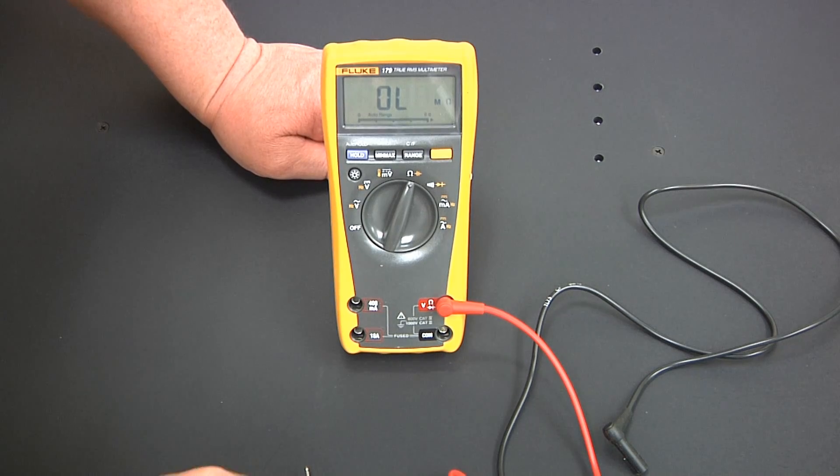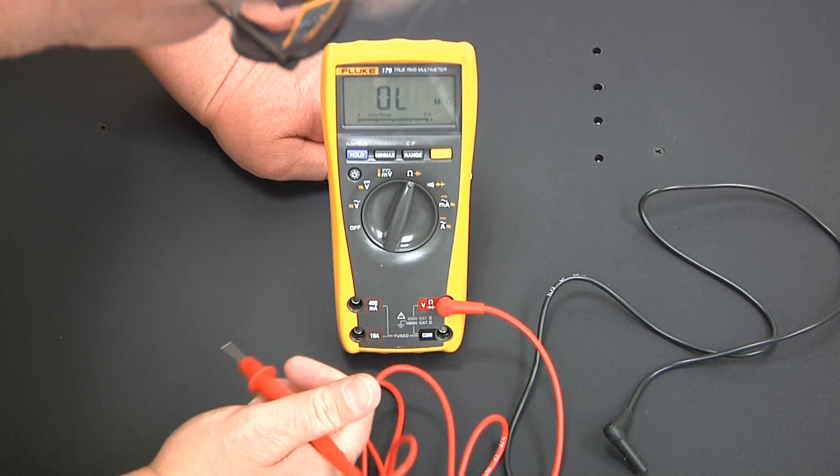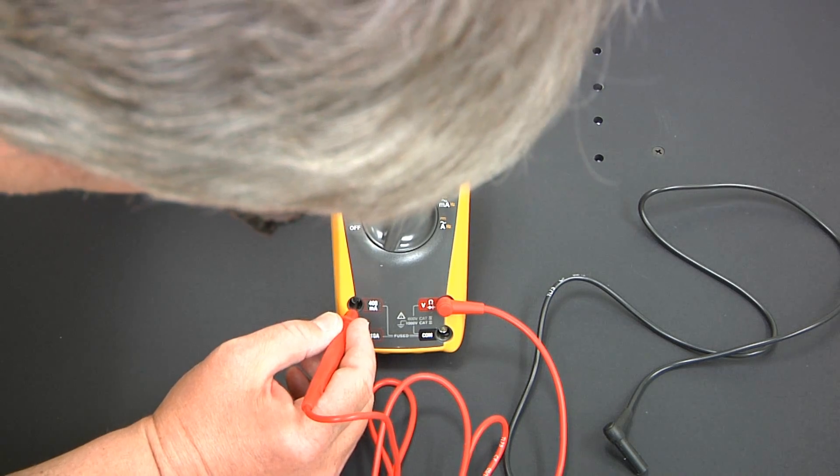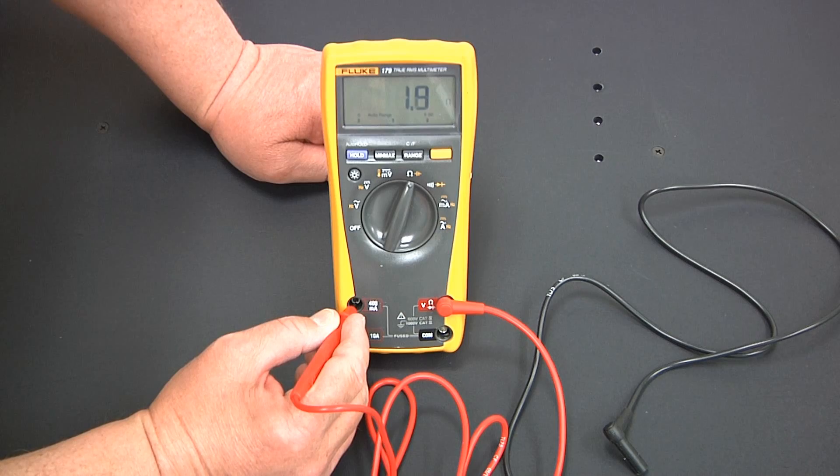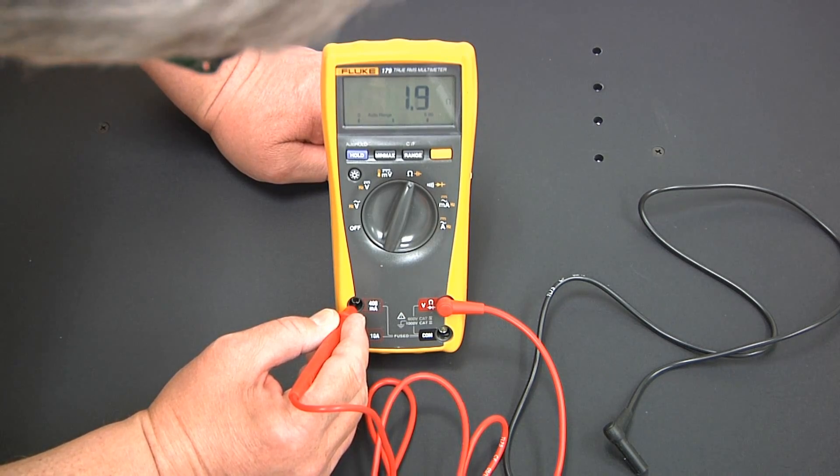To check the fuse, first touch the red probe to the 400 milliamp port. You should get a reading of around 2 ohms or less.